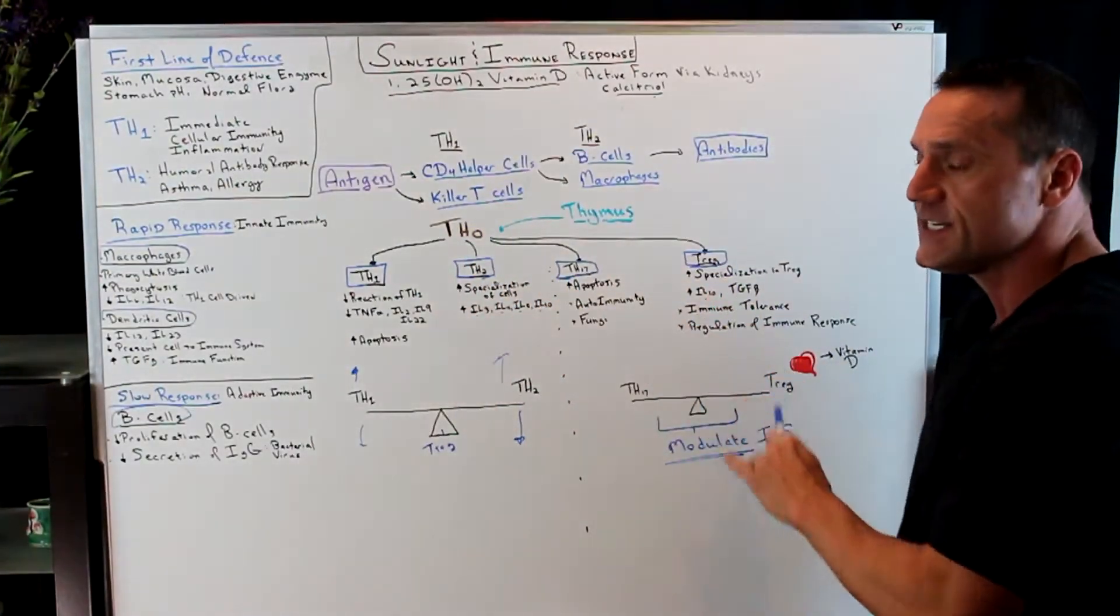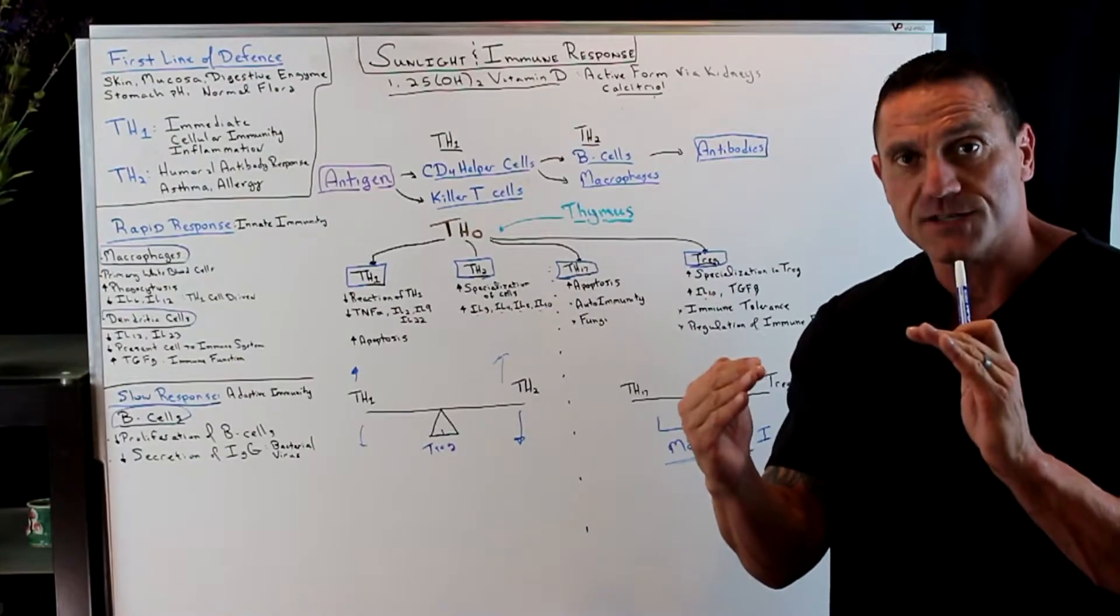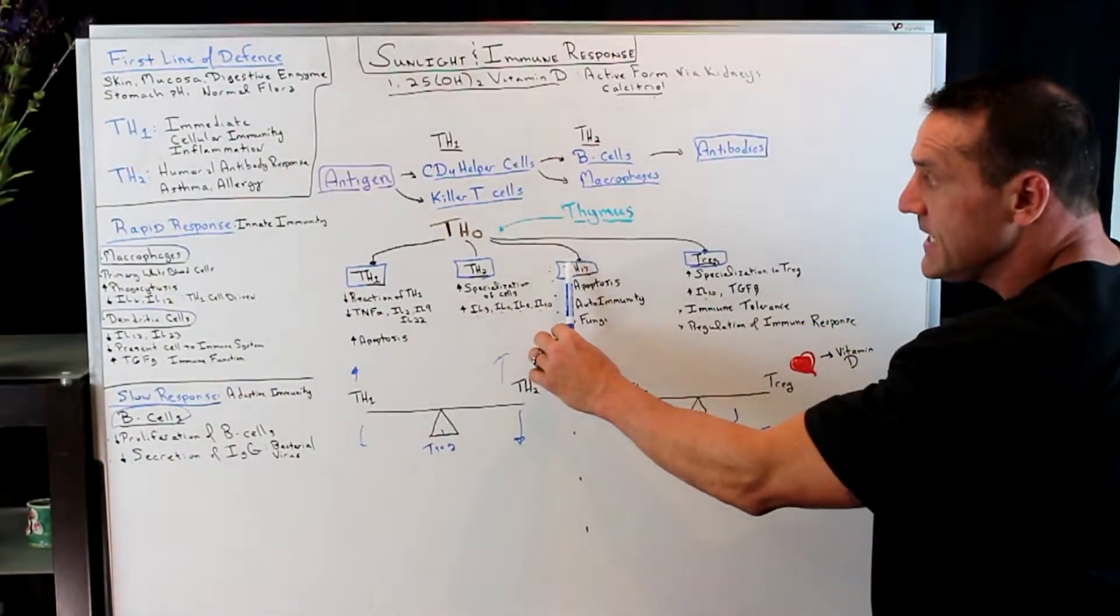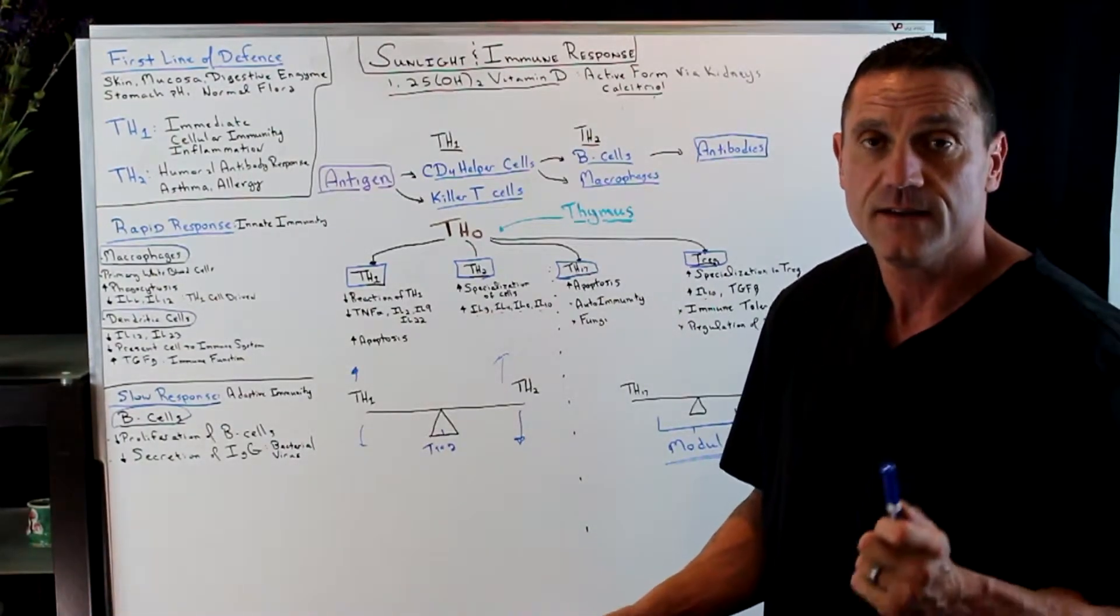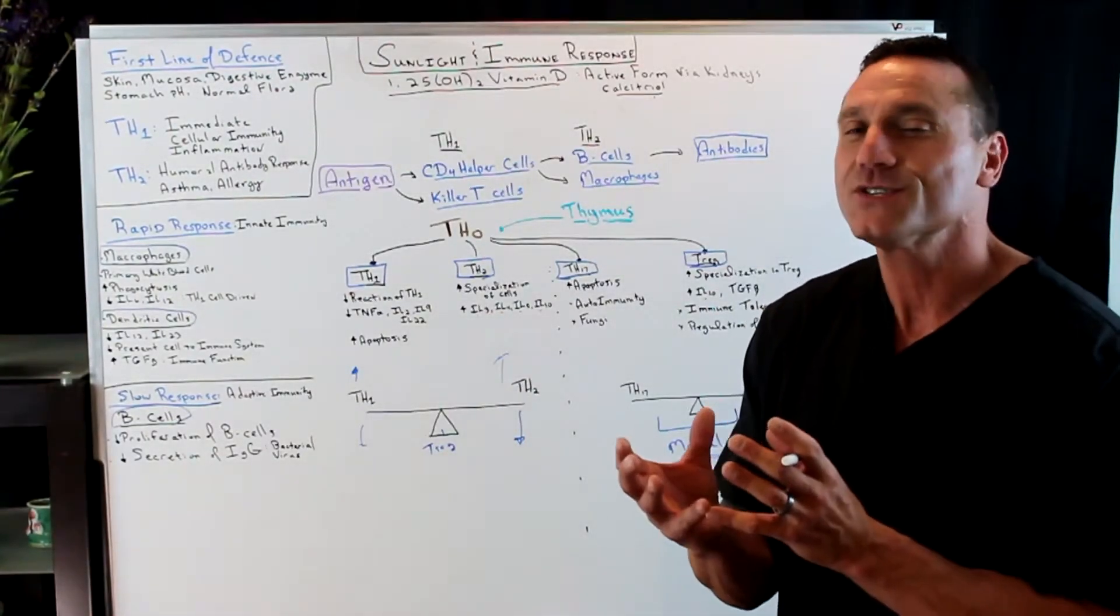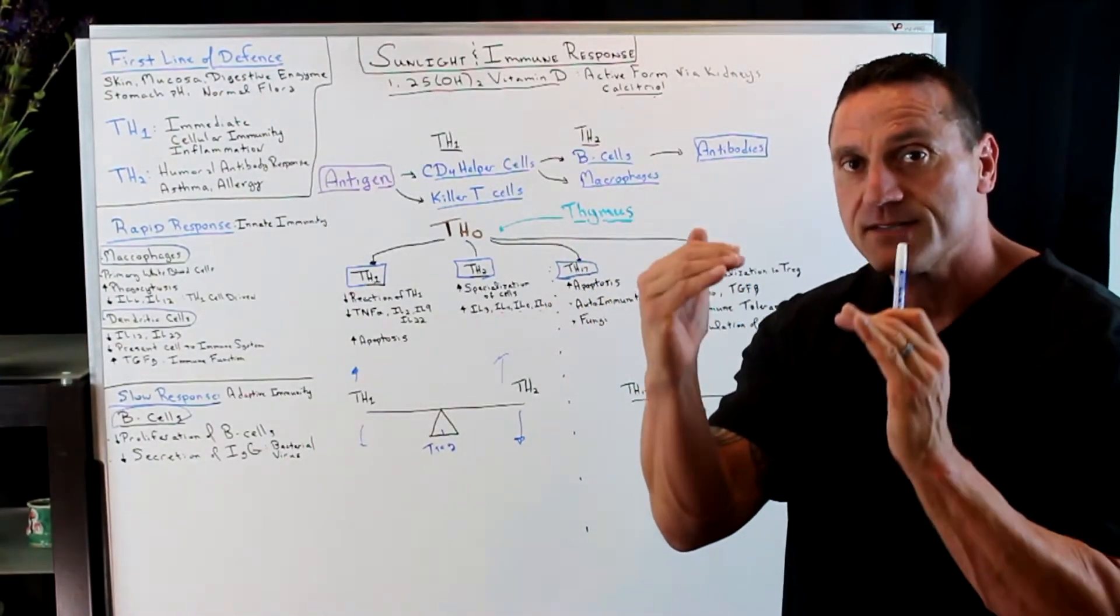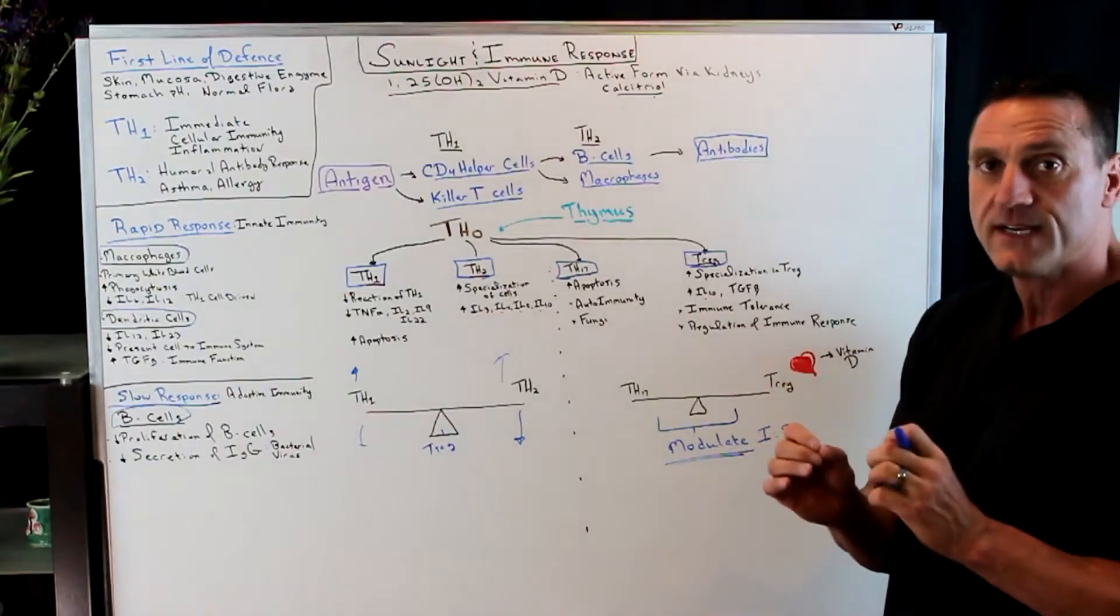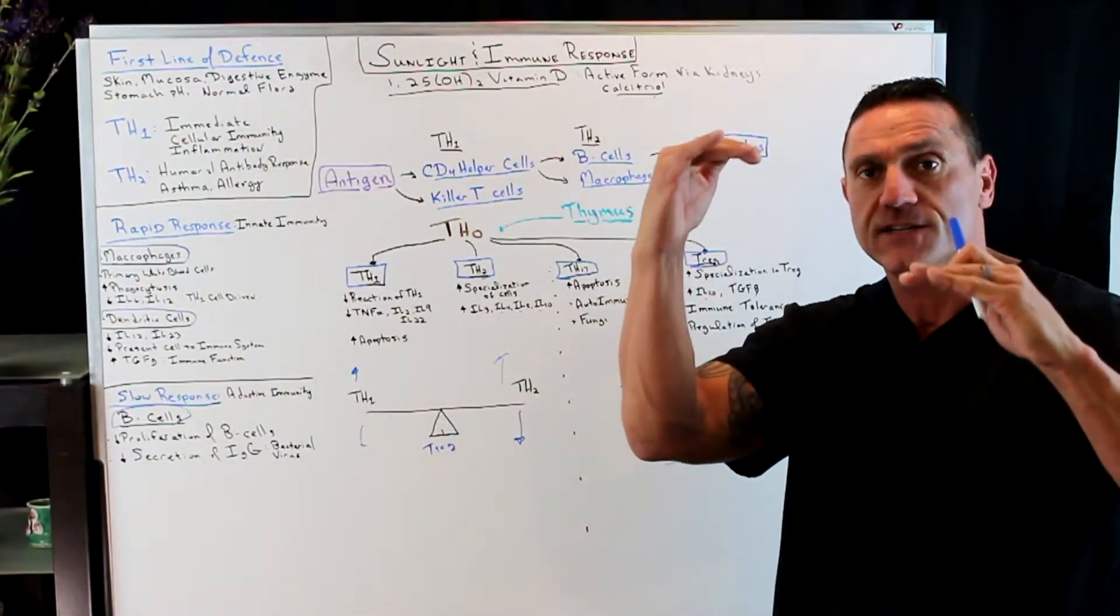Now we have what's called those Th17 and T-regulatory cells. Th17 and T-regs, those are the modulators. Those are the ones that turn on and turn off the immune response. So with Th17, again, this is all good for the sun. It helps, again, increase apoptosis, programmed cell death. In addition, for people who have autoimmunity and chronic fungi infections or fungus infections, this is where sunlight is going to do you really good because it helps balance that out. In addition, the T-regulatory cells.